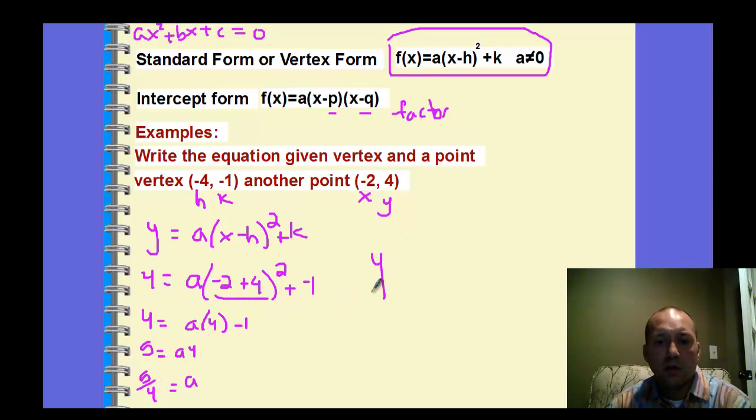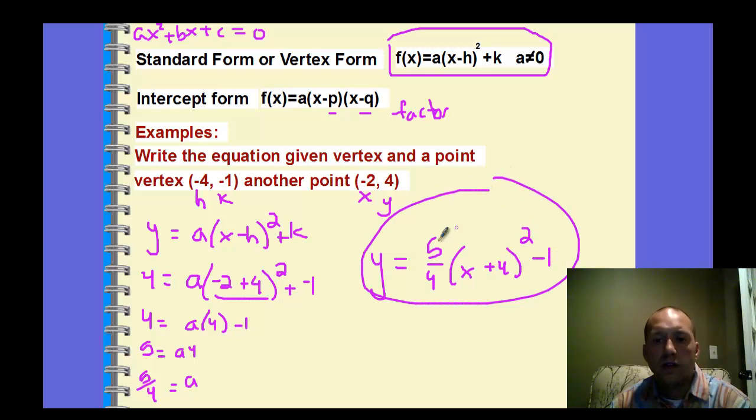That's our a value. Now I can rewrite the equation with my a value with the h value and the k value. So there's the equation I would write.